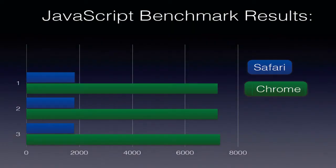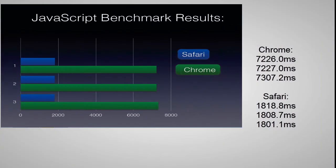You guys can obviously see in these numbers right here — I actually tested them out three times. You guys can see this graph and get really consistent results. Chrome scores about 7226 milliseconds, while Safari scores about 1818.8 milliseconds in the first test. On the second test, Chrome scores 7227.0 milliseconds while Safari again scores 1808.7 milliseconds. The average for Safari is around 1800 milliseconds and Chrome is about 7200 milliseconds. So Safari wins the rendering test hands down.